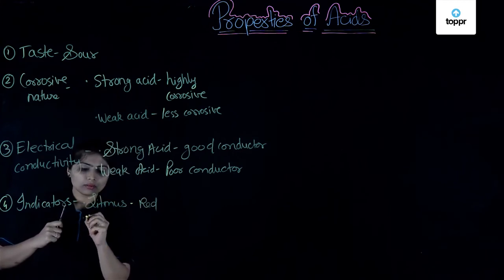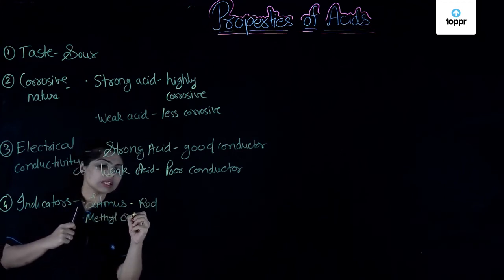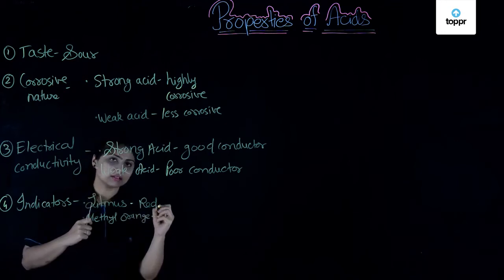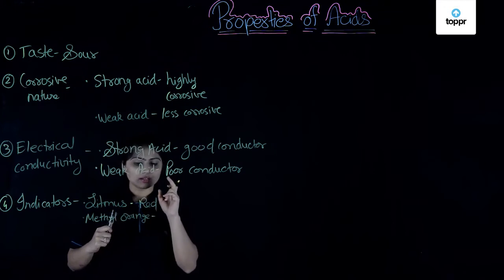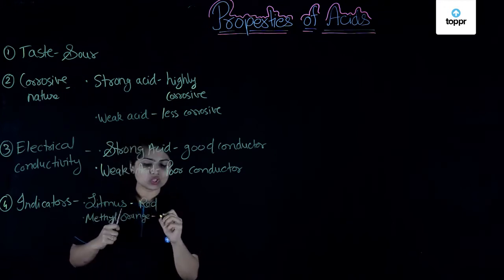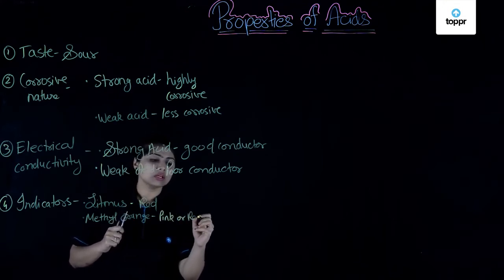Then, if we talk about methyl orange. Methyl orange is an artificial indicator or you can say a synthetic indicator, man-made. It is orange in colour and when it comes in contact with an acid, it can change from orange to pink. It can change from orange to pink and if it is a very strong acid, it can change to red.